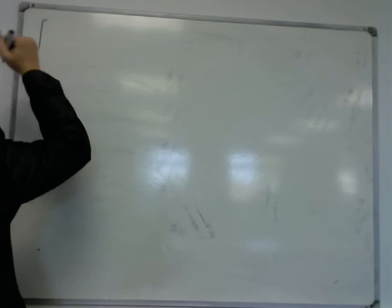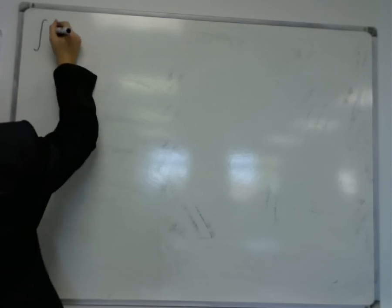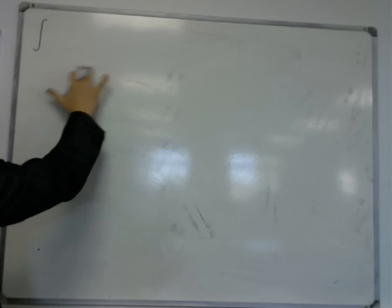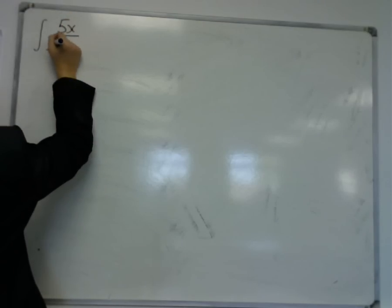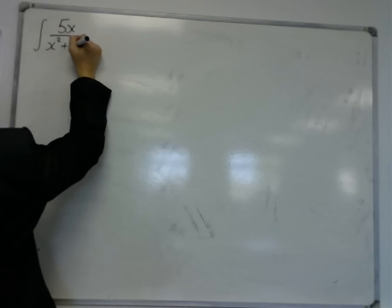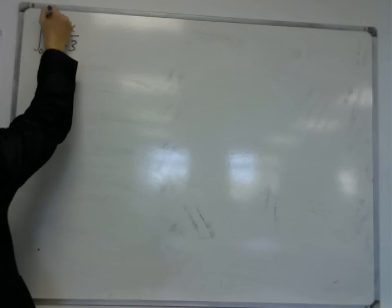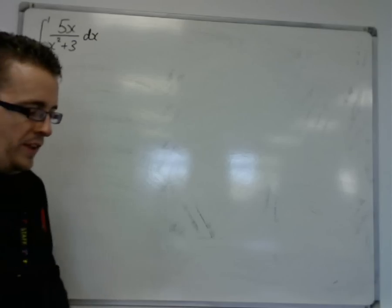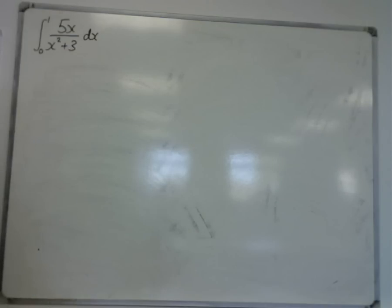What should we integrate this time? Let's have the integral of 5x over x squared plus 3 between 0 and 1. So here's another one. This is, once again, one that you could use using the log trick, backwards chain rule.